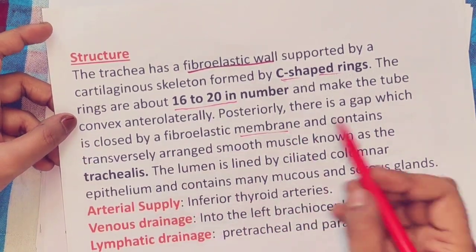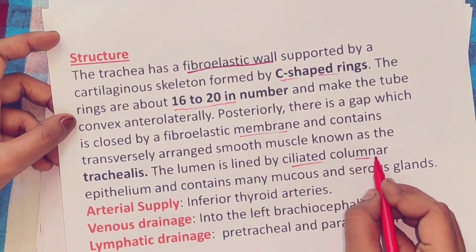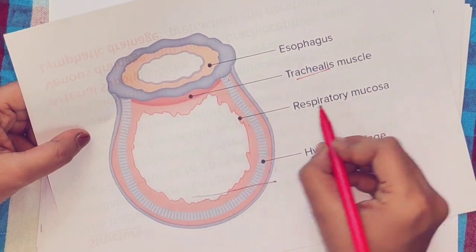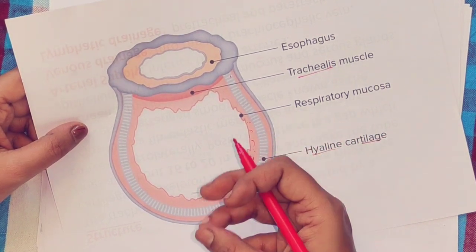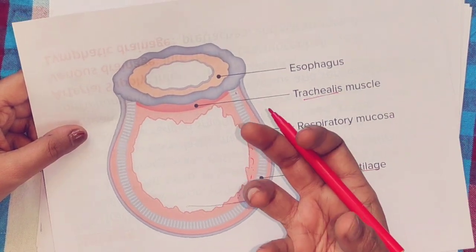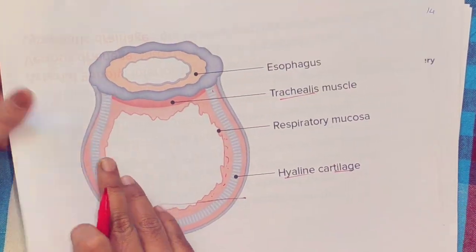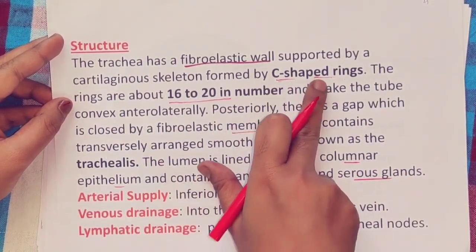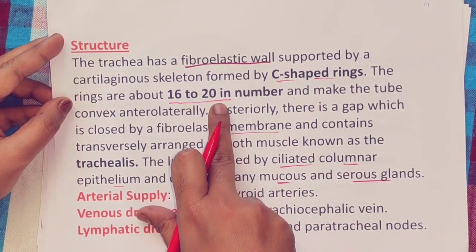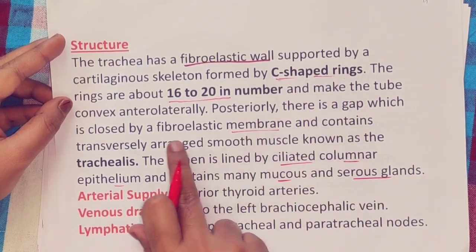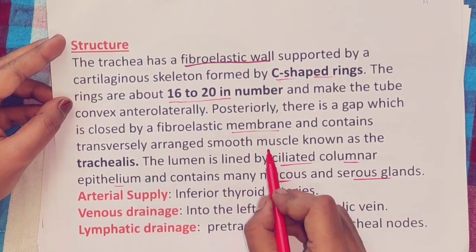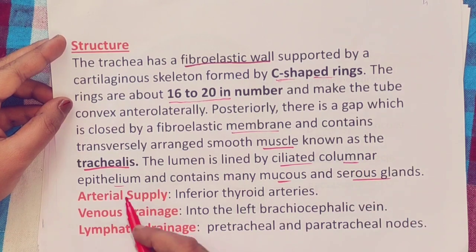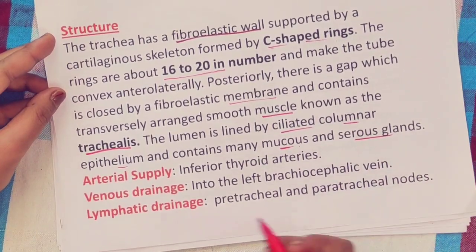The interior lumen of the trachea is lined by ciliated columnar epithelium. Mucous and serous glands are also present. These glands secrete mucus and serous fluid to engulf any foreign bodies that enter, helping to expel them through coughing. This completes the structure of the trachea: fibro-elastic wall, 16–20 C-shaped hyaline cartilage rings, absent posteriorly with trachealis muscle, lumen lined by ciliated columnar epithelium with mucous and serous glands.